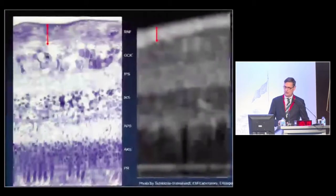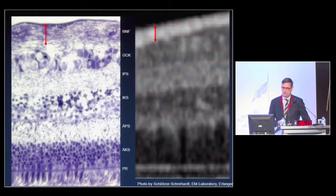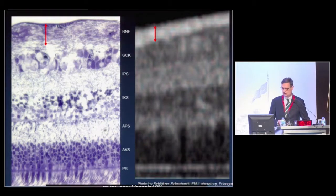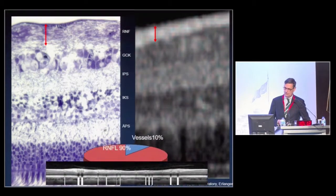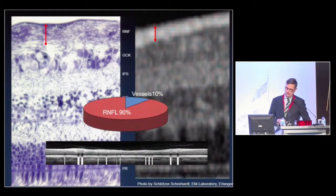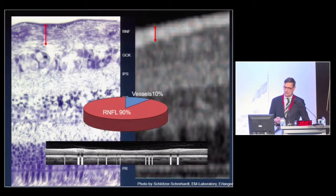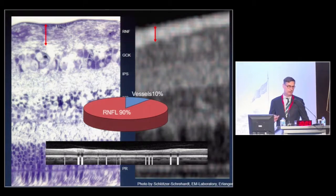When you look at the retinal nerve fiber layer measurement around the optic disc, the retinal nerve fiber layer is a rather simple structure, and only 10% of this layer consists of retinal vessels. 90% of the layer we would like to measure goes down in the course of glaucoma disease.